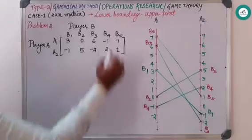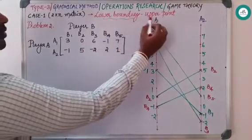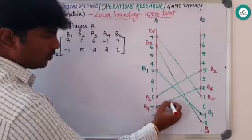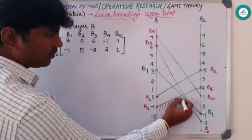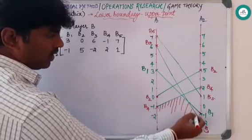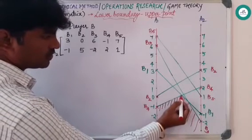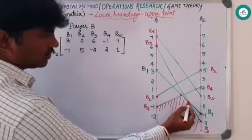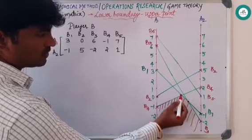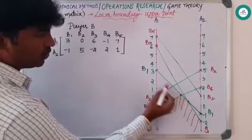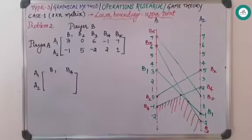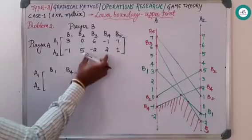After joining all these lines, as usual you should remember a lower boundary and an upper point. So in this particular, the lower boundary goes this way, and we have two intersection points. So this is one and somewhere here. So out of these two values, definitely this is the maximum one, which is belonging to B1 and B4.